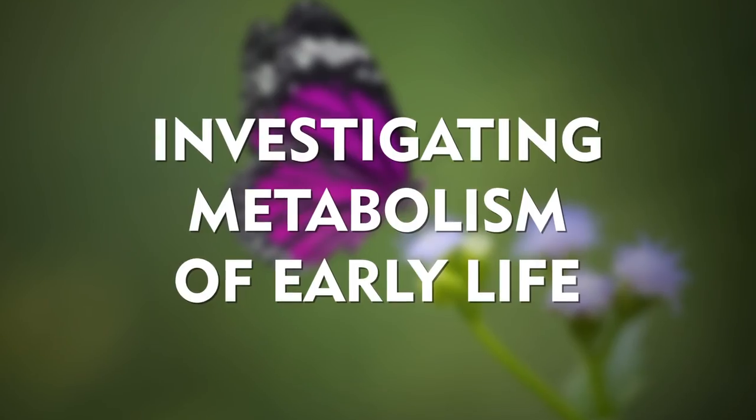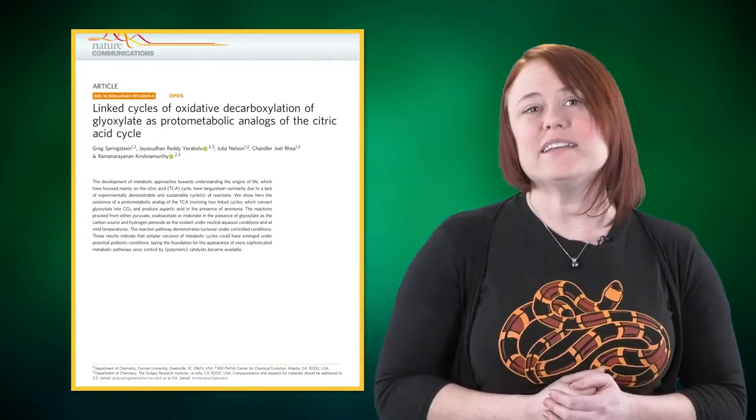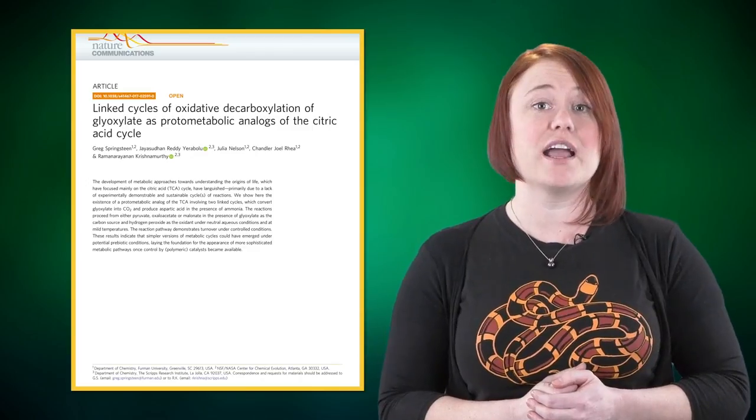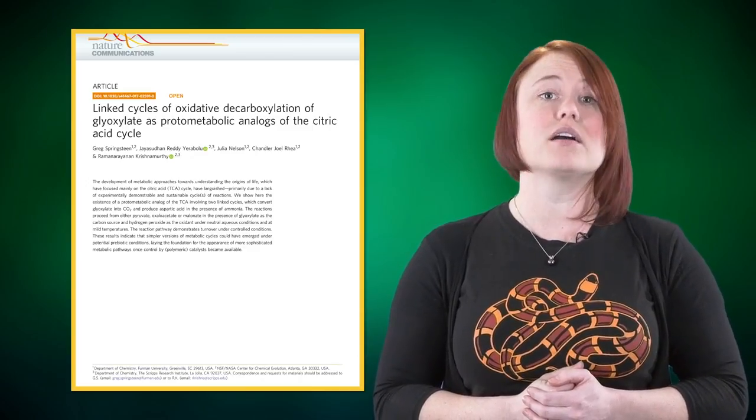The next life-themed topic we tackled was in a format called Denatured, where I broke down a popular peer-reviewed journal article on the metabolisms of early life forms. We're going to look at an article published at the start of 2018 in the prestigious journal Nature Communications. The title of the paper is 'Linked Cycles of Oxidative Decarboxylation of Glyoxalate as Protometabolic Analogues of the Citric Acid Cycle.' Don't be daunted by the title — this study is actually really cool and is centered around investigating the beginnings of life on Earth.